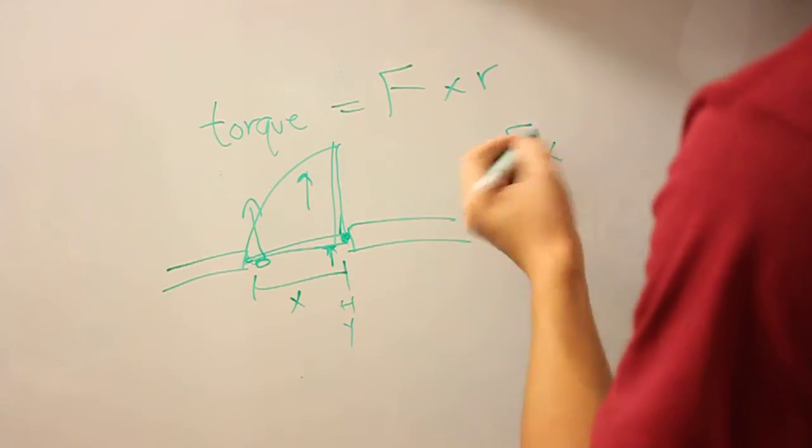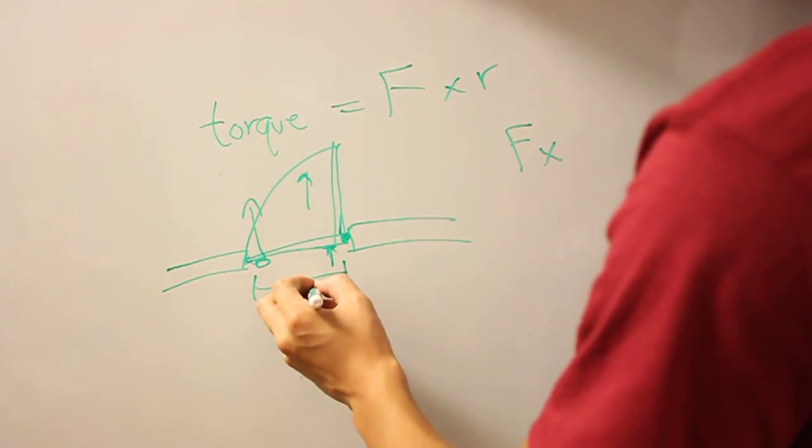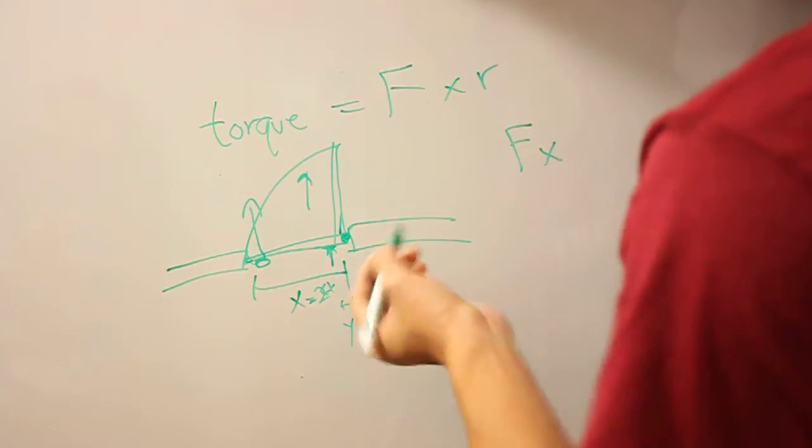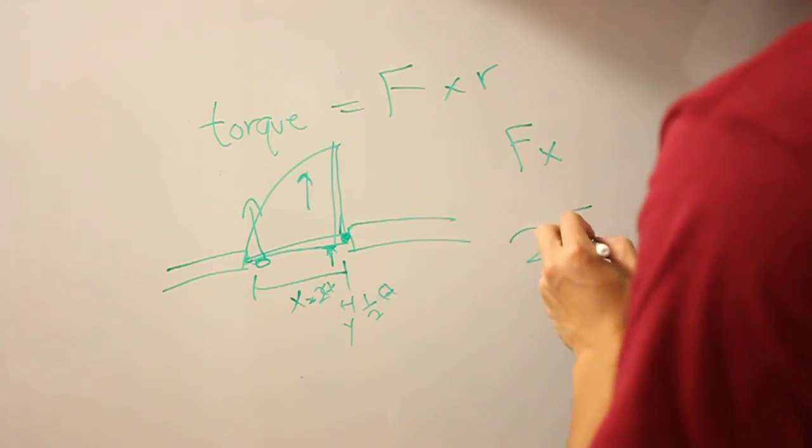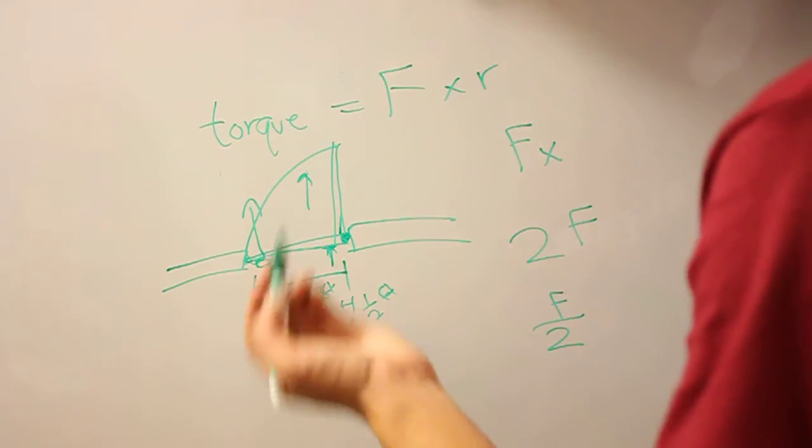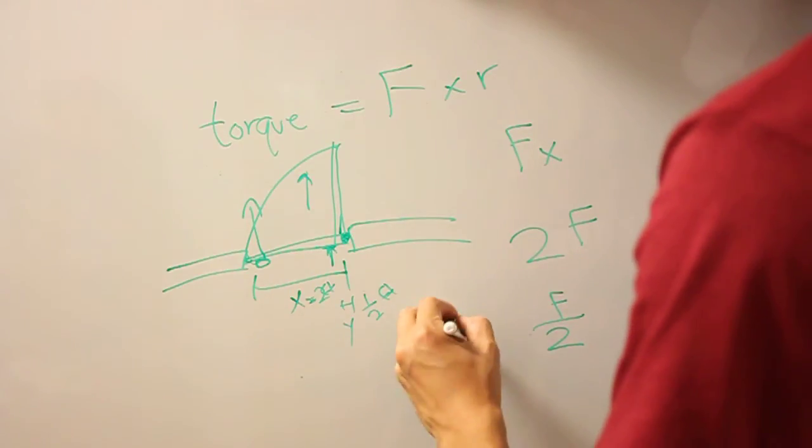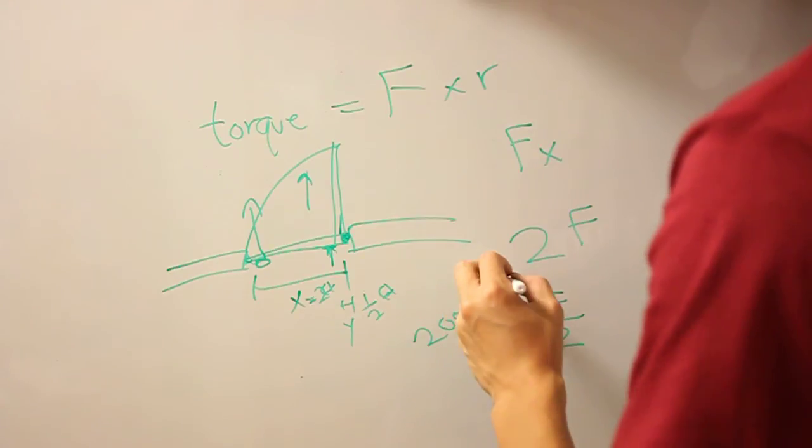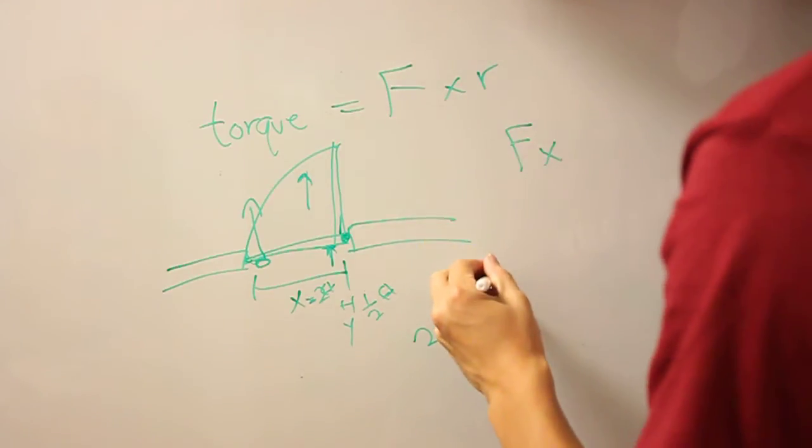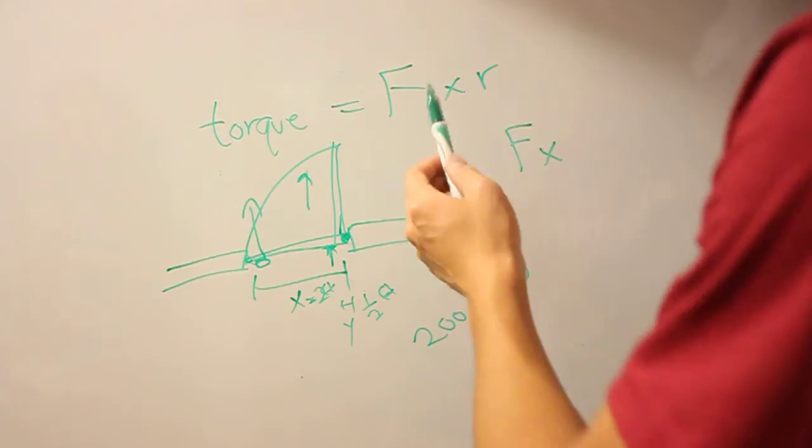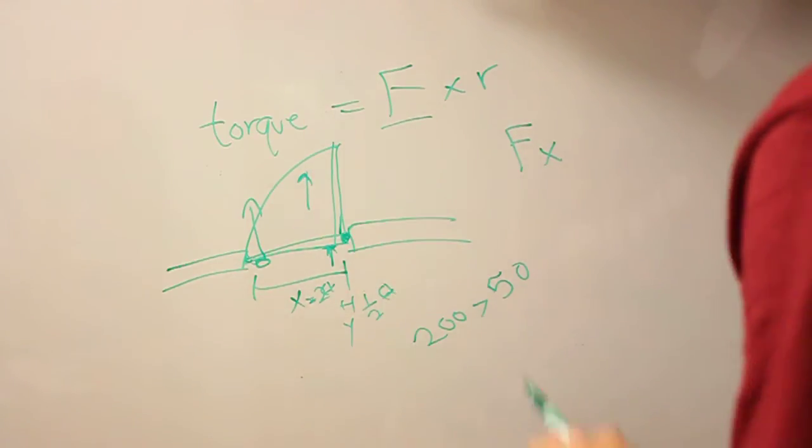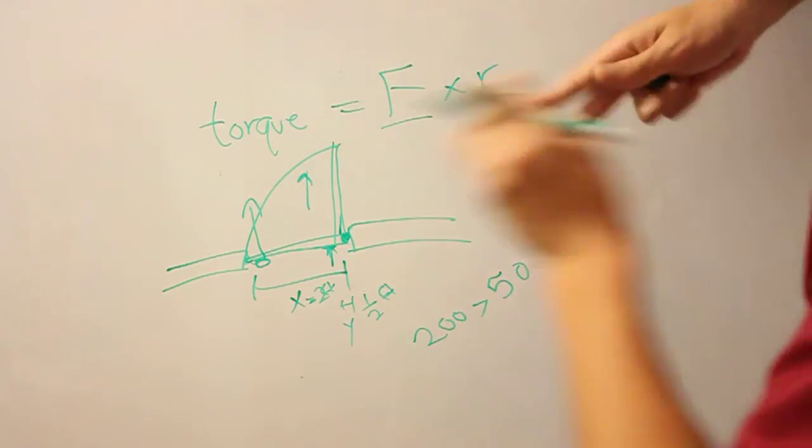So, Fx, say if X equals, say, 2 feet, and this equals half a foot, then you have either 2F or F over 2. And if your force is like 100 N, then you have 200, which is way greater than 50. So, what is this actually saying here? That you're applying the exact same force, but just changing your location of pushing on that door inwards, you can quadruple the effect you have, torque-wise.